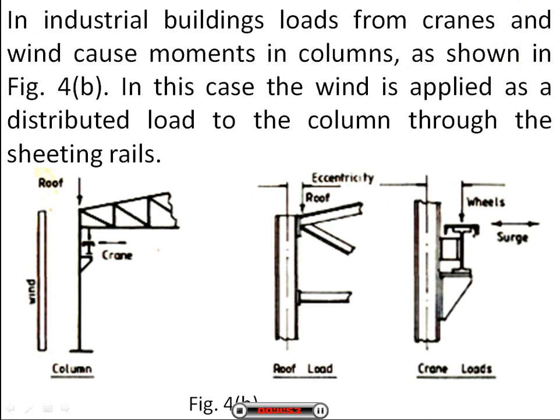In industrial buildings, loads from cranes and wind cause moments in columns as shown in figure 4B. In this case, the wind is applied as a distributed load to the column through the sheeting rails, as we can see in the figure.